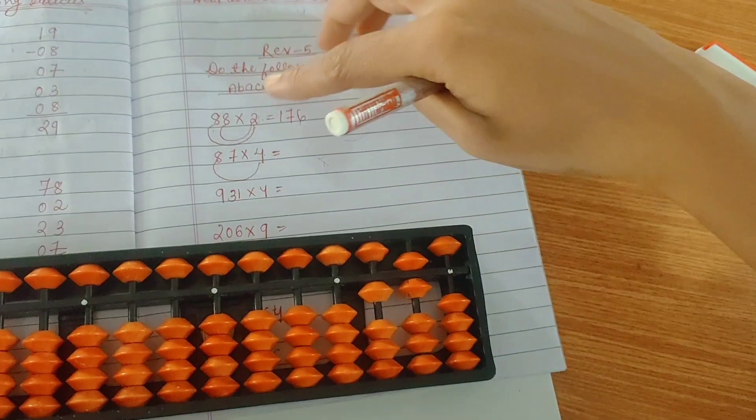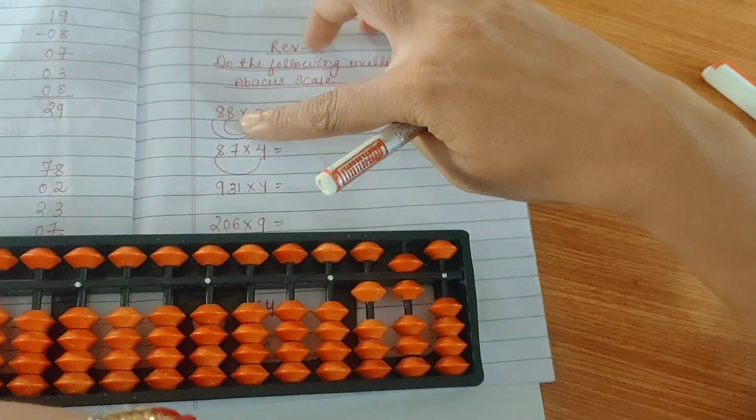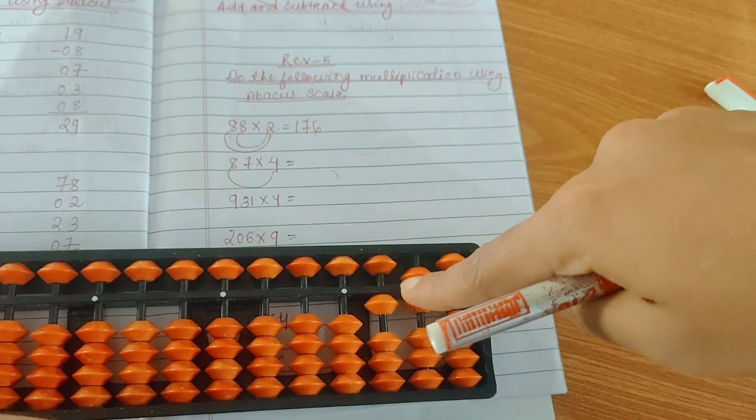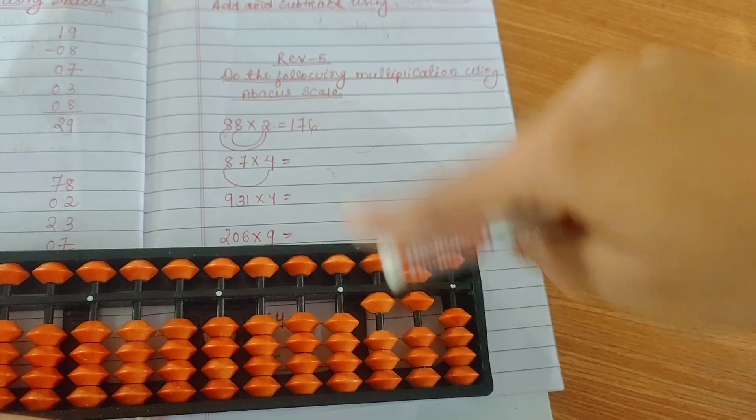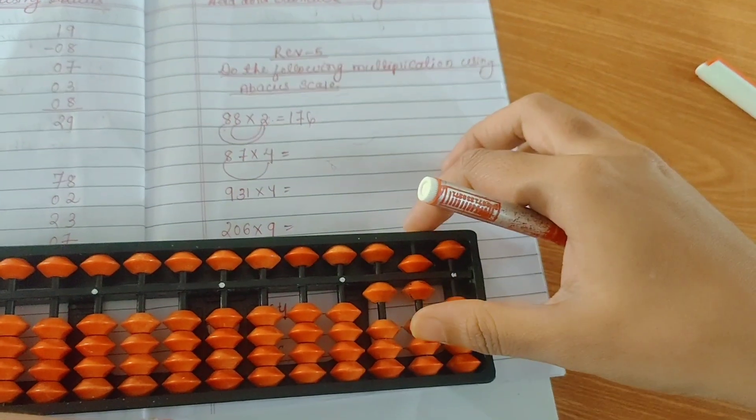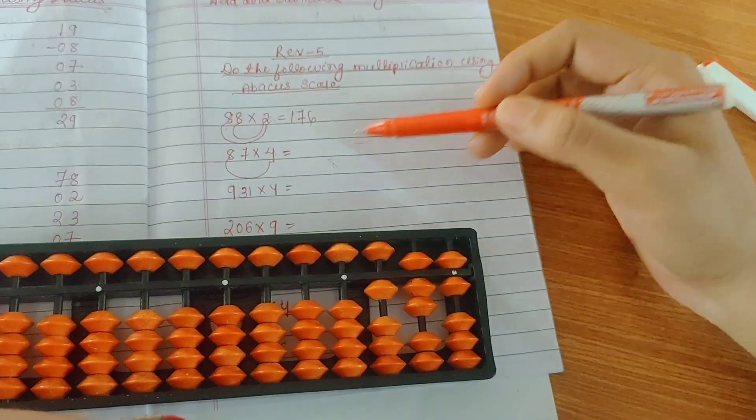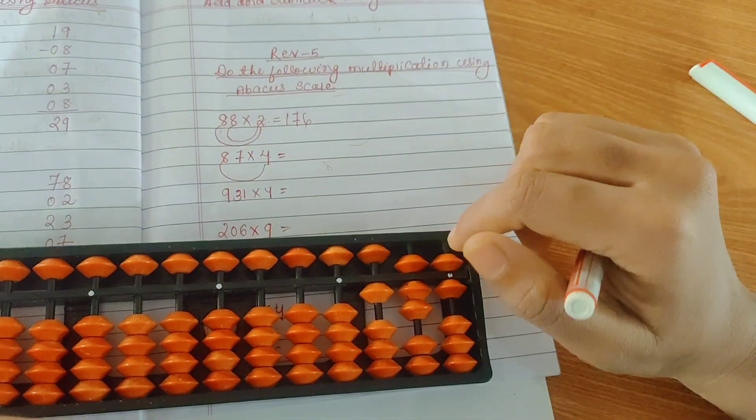Again, 2 times 8 is 16. When you multiply the second number, you will skip the first row and start from the next. So 2 times 8 is 16: 1, 6, 16. The answer is 176.